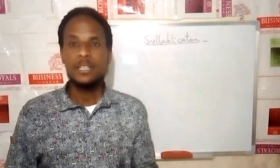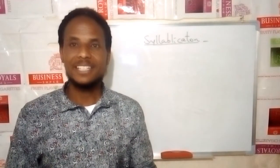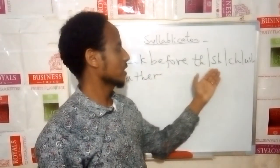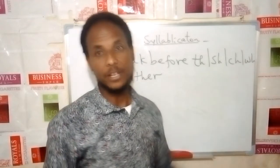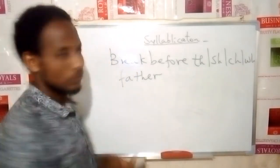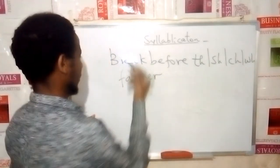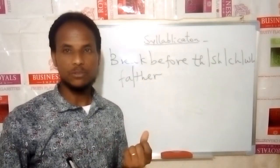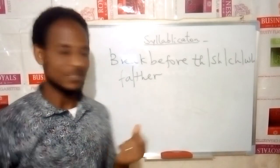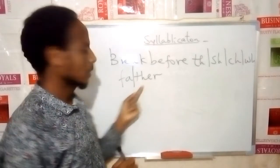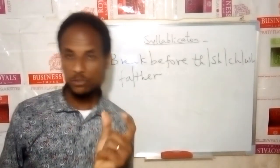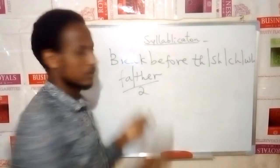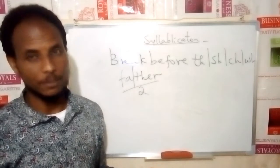Now the exceptions regarding consonants: if there are double consonants in a word, break before the consonants. Also break before the digraphs TH, SH, CH, and WH. For example, 'father' — the syllabification is made before the TH. There are two vowel sounds, so 'father' is disyllabic: fa-ther.